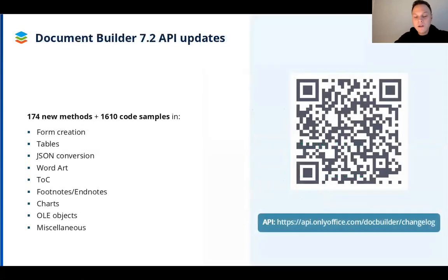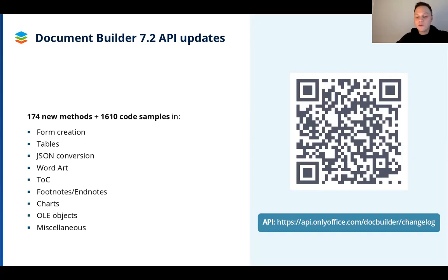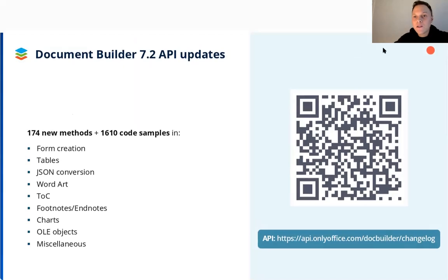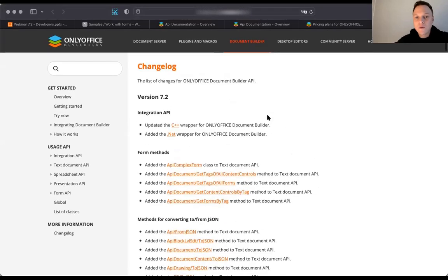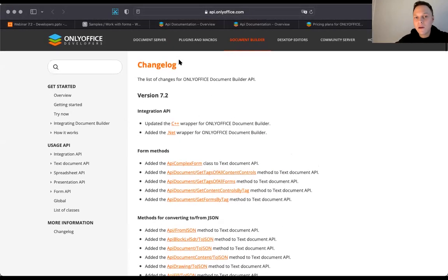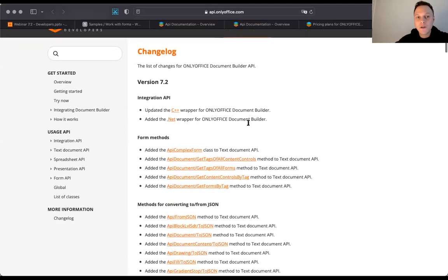Last but not least, multiple new methods have been added in the Document Builder API, making it a total of over 1,500 methods and code samples available. You can go through the QR code on the screen to access the documentation, where you can find all new methods in the change log.